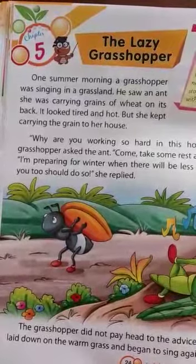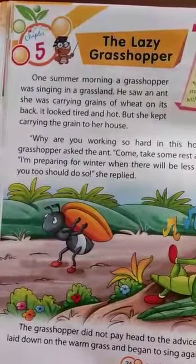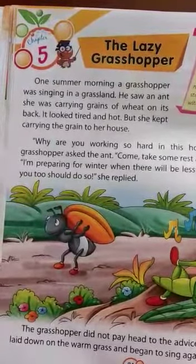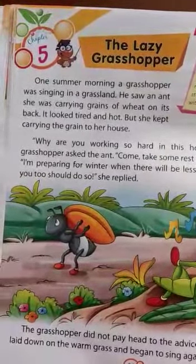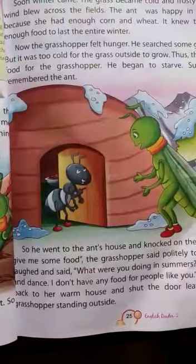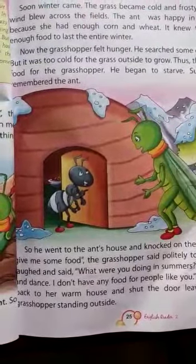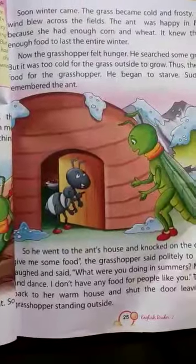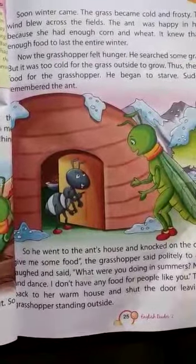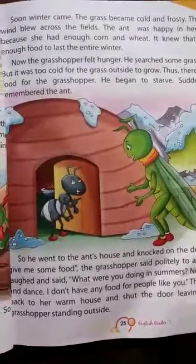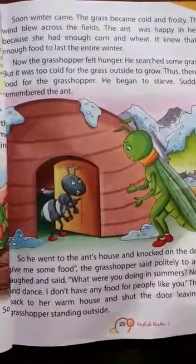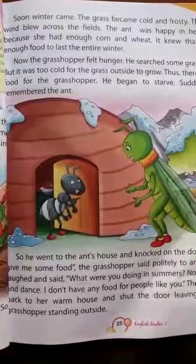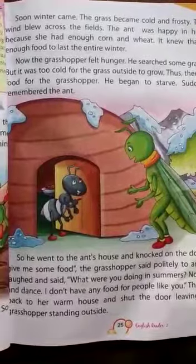But the grasshopper didn't pay attention to the ant's advice. After some time, winter came. The grasshopper became cold and the weather was very cold. The grasshopper felt hungry and searched for grass to eat, but it was too cold for grass to grow, so he began to starve. Suddenly he remembered the ant, went to her, knocked on the door, and said politely, 'Please give me some food.'